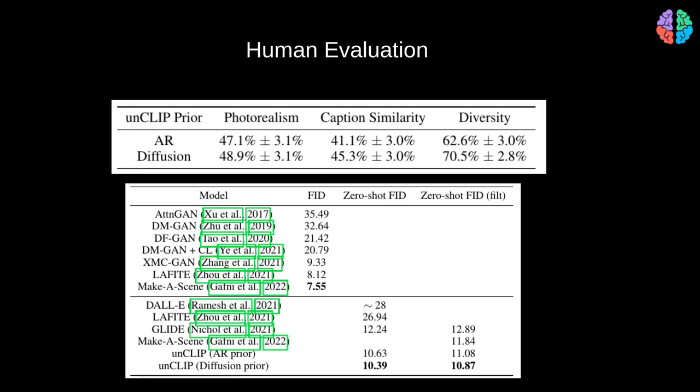Now, if we move on to the quantitative results, the FID scores also seem to prove the same point. Moreover, their study with human evaluators showed that the unCLIP model with the diffusion prior has a lot of diversity compared to the autoregressive prior. In a different table, they also report the FID scores of unCLIP against different state-of-the-art methods. We notice that unCLIP has really impressive FID scores.